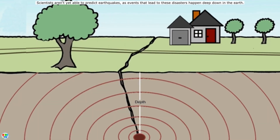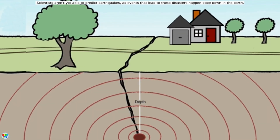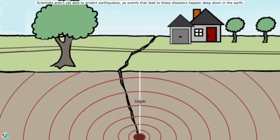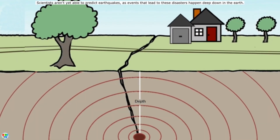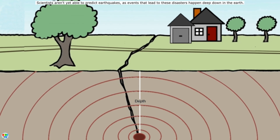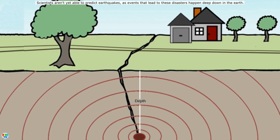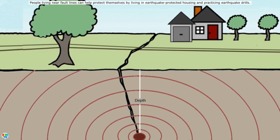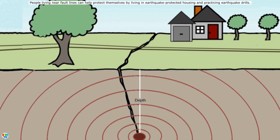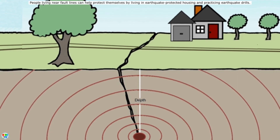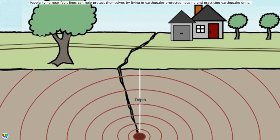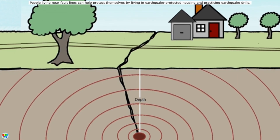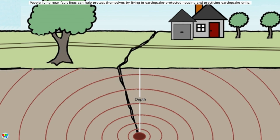Scientists aren't yet able to predict earthquakes, as events that lead to these disasters happen deep down in the Earth. People living near fault lines can help protect themselves by living in earthquake-protected housing and practicing earthquake drills.